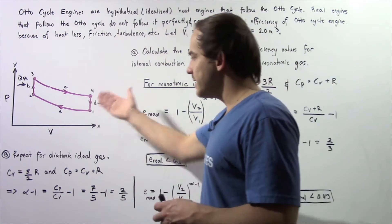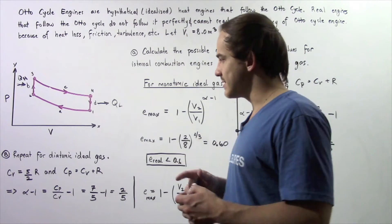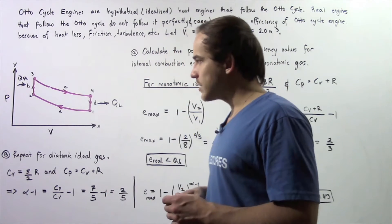Now the Otto cycle is depicted in the following diagram where the x-axis is the volume and the y-axis is the pressure.